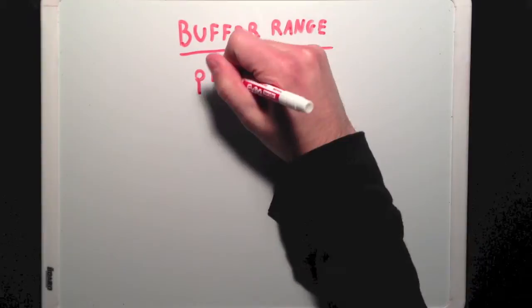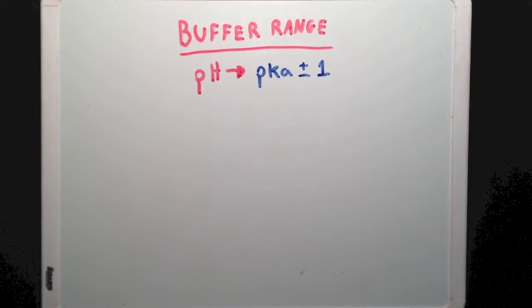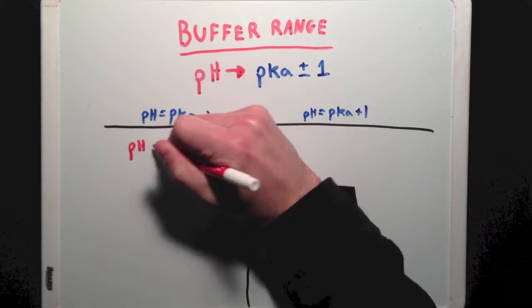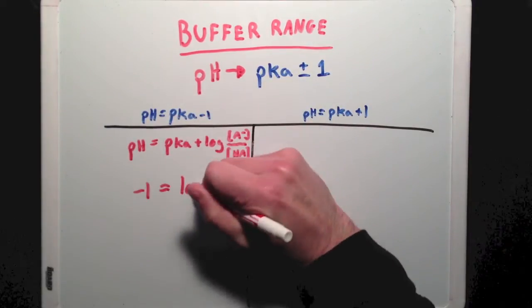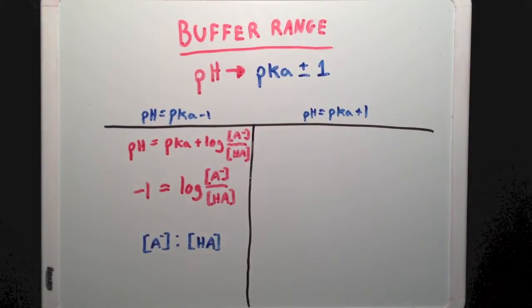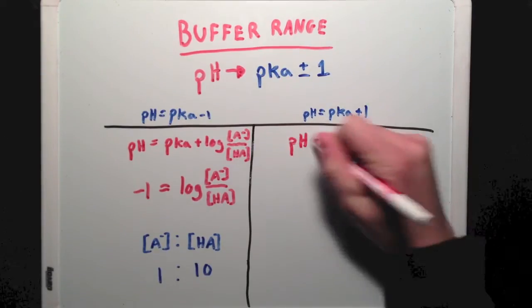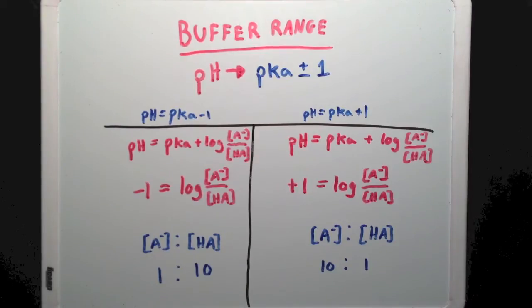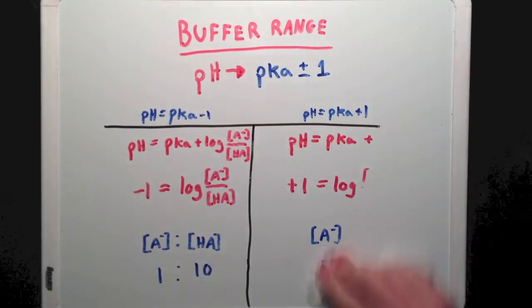Buffer ranges are typically within one pH unit in either direction of a buffer's pKa. Let's look at why. If the pH is one unit below the pKa, then the concentration of conjugate acid is 10 times greater than the concentration of conjugate base. If the pH is one unit higher than the pKa, then the concentration of conjugate acid is 10 times less than the concentration of conjugate base.